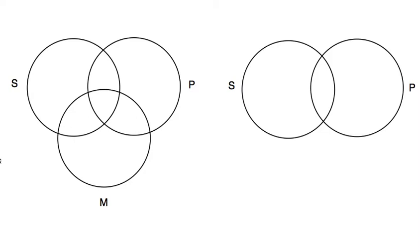No M are S. That means that there's nothing in the intersection of the two categories, M and S. That should be empty, so we're going to shade out that intersection of these two categories.